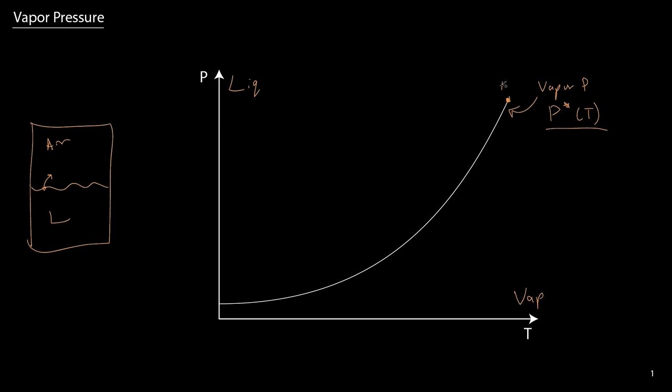This point up here, this is the critical point. So Tc, Pc. If we were to trace this down over here, we could have the critical temperature and the critical pressure. And notice that there is no vapor pressure above the critical point because at this point, there is no way to distinguish between a liquid or a vapor.